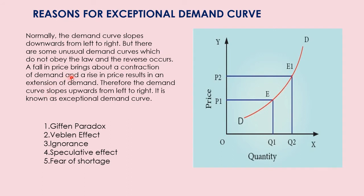In the exceptional demand curve, a fall in price brings about a contraction of demand, and a rise in price results in an extension of demand. So when price falls, demand also falls; when price rises, demand increases. This is called the exceptional demand curve. Therefore, the demand curve slopes upwards from left to right — it is known as the exceptional demand curve.